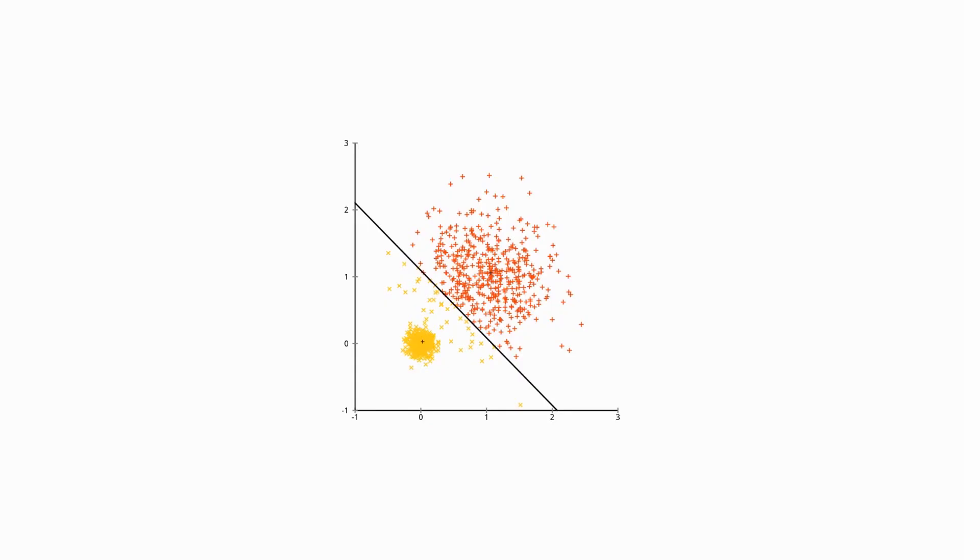This is the simplest example for which the k-means algorithm cannot make a good split. In this dataset, there are obviously two clusters, but the variances of the individual clusters are different.